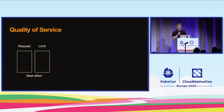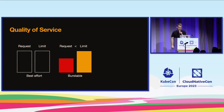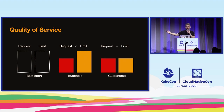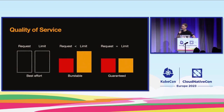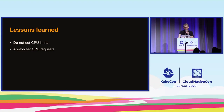There are three QoS classes. If you don't specify a request or limit, you're in the Best Effort class — you don't want to be there. Once you set a request, you're in the Burstable class: you're always guaranteed your request, but if you exceed it you're subject to throttling or termination. If your request equals your limit, you're in the Guaranteed class. Guaranteed sounds great, but your request is already guaranteed in Burstable — and in Burstable you can get more. For CPU, I would advise not setting CPU limits, but always set requests so you're protected from noisy neighbors.